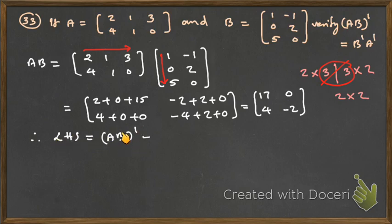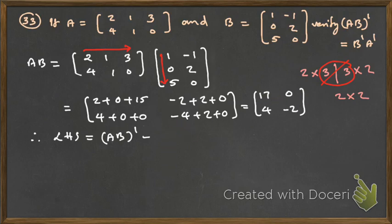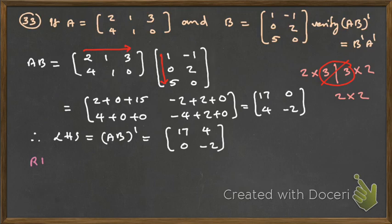The left-hand side is (AB)^T. Taking the transpose of AB: the first row 17, 0 becomes the first column, and the second row 4, −2 becomes the second column. So LHS = [[17, 4], [0, −2]].